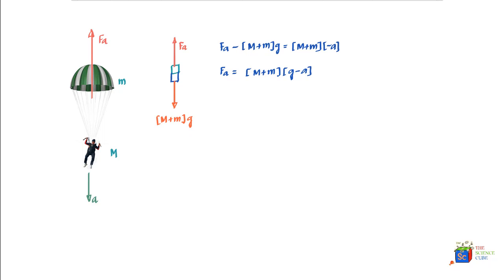The second part of the problem asks for the force on the parachute due to the person — that is, the pull created by the person on the parachute. To find this, we'll draw a free body diagram, but this time for just the parachute alone.